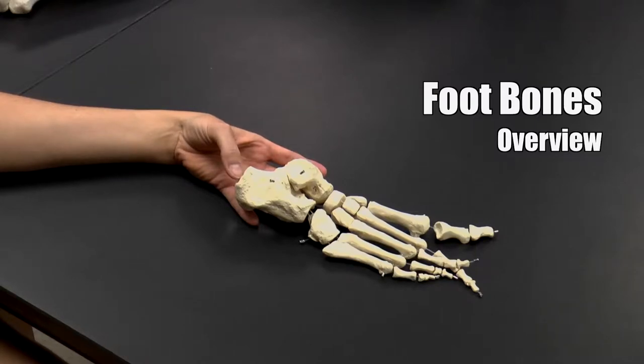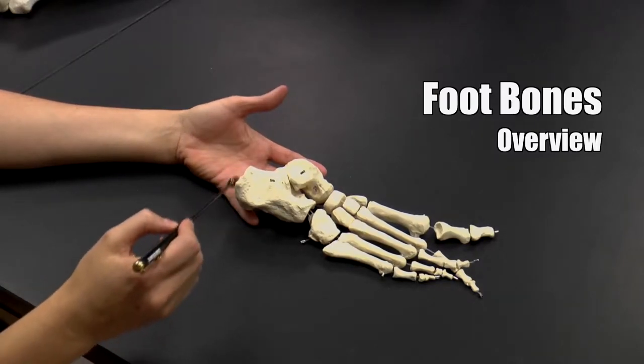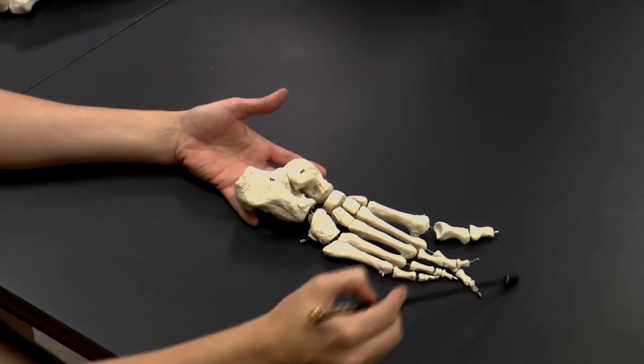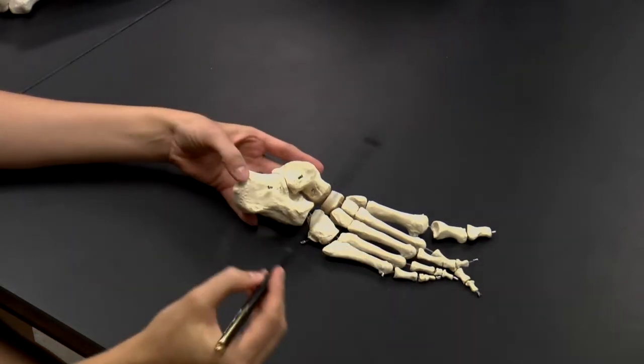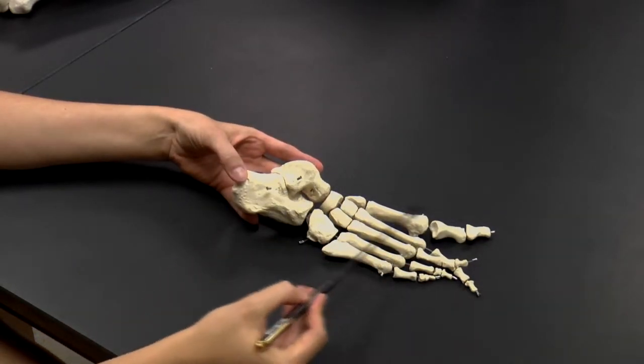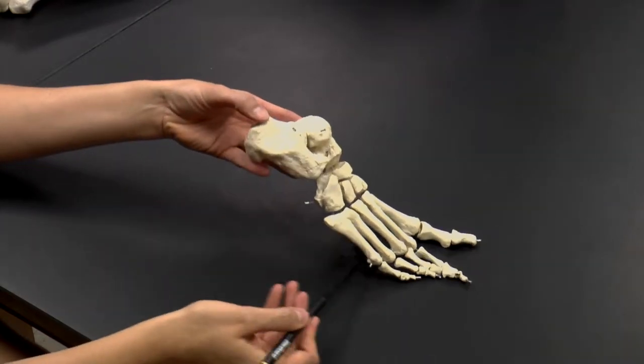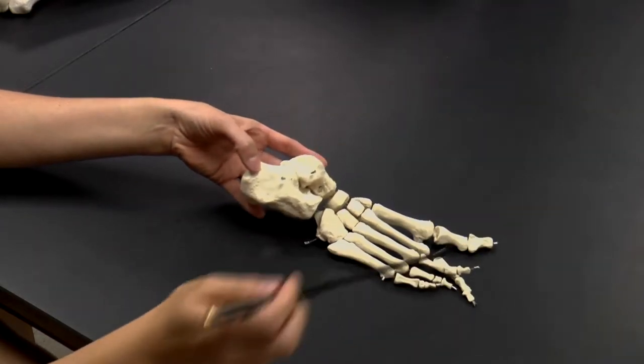So here you can see a foot, and this is the back, this is the heel, and then here are the tips of your toes. And then this is a superior view, so this is the top of your foot, and then this would be the plantar face, the bottom of your foot, where your sole is.